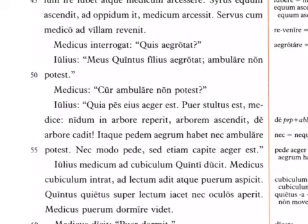Aeger can mean sick, ill — here I'd say unwell or perhaps injured. Julius continues: Puer stultus est, medice — the boy is stupid, doctor. Nidum in arbore reperit — he finds a nest in a tree. Arborem ascendit — he climbs the tree. De arbore cadit — he falls out of the tree. Itaque pede aegro manet — so he has an unwell, injured foot. Nec ambulare potest — nor is he able to walk. Nec modo pede, sed etiam capite aeger est — not only in his foot, but also in his head he is unwell. It's unclear whether he means the boy is stupid or that he has a headache — we'll see later he mentions pains in his head as well.